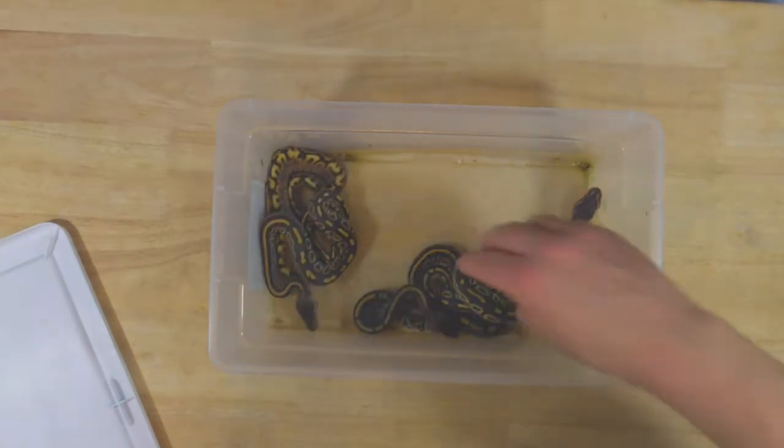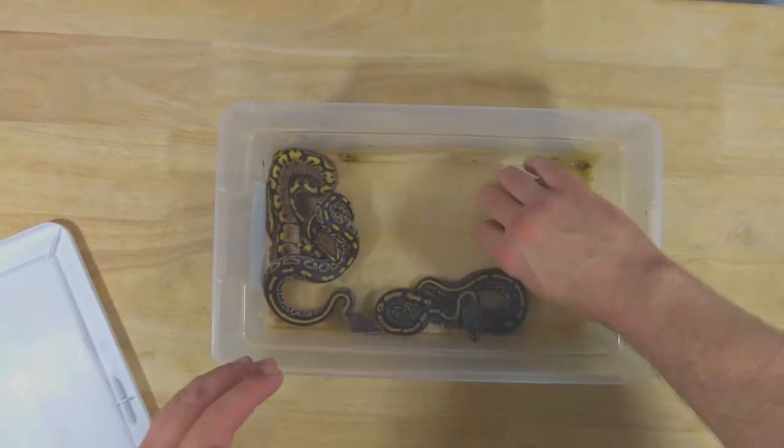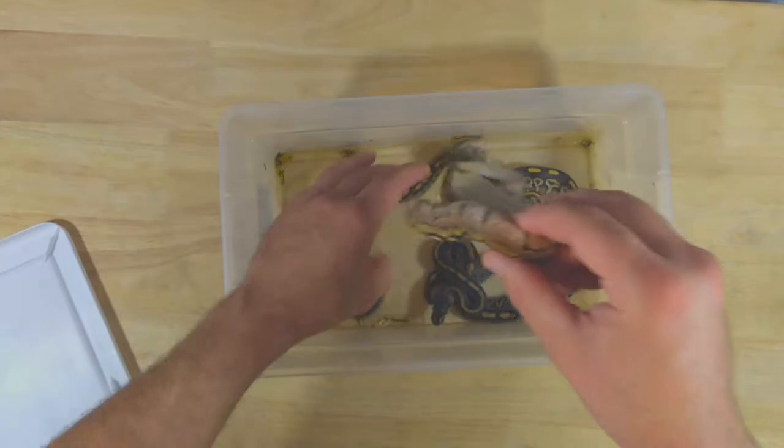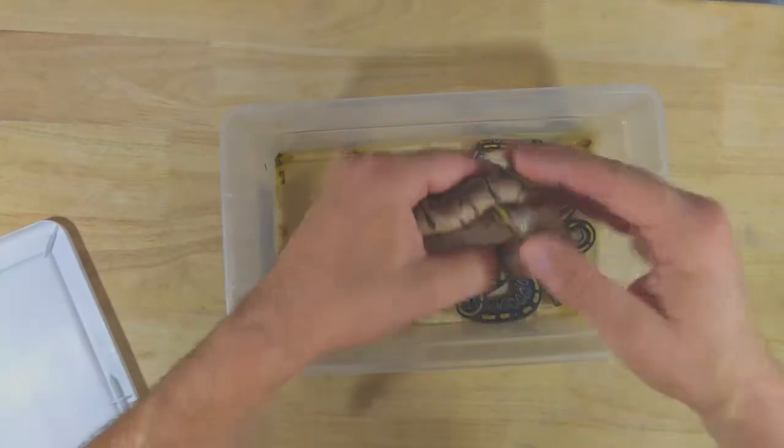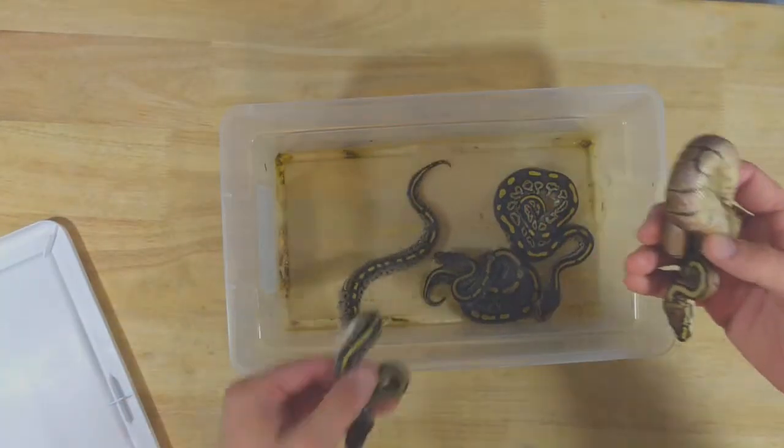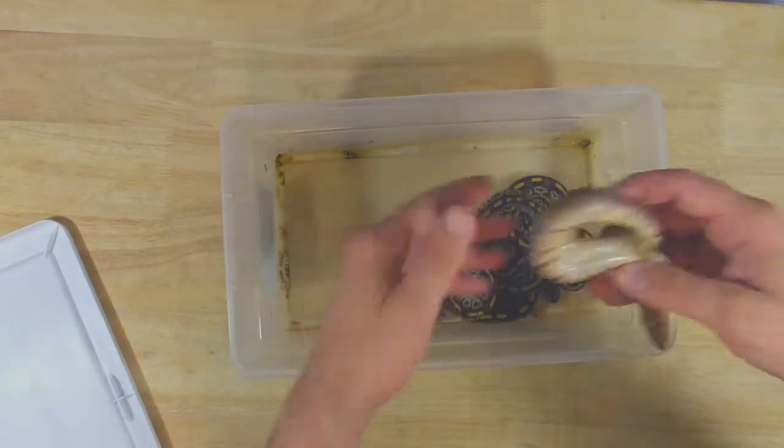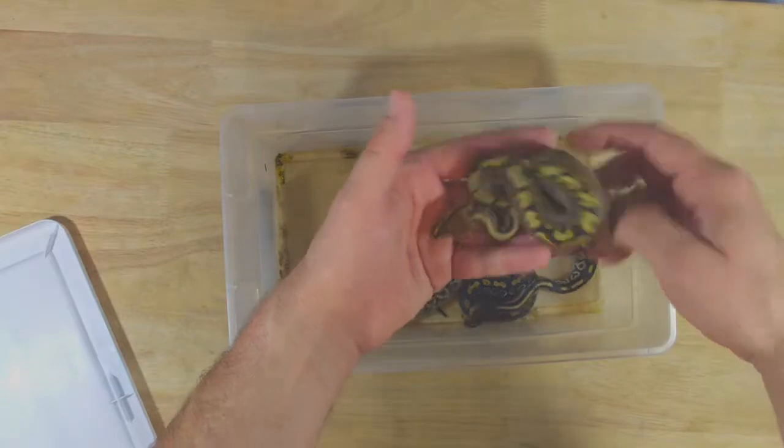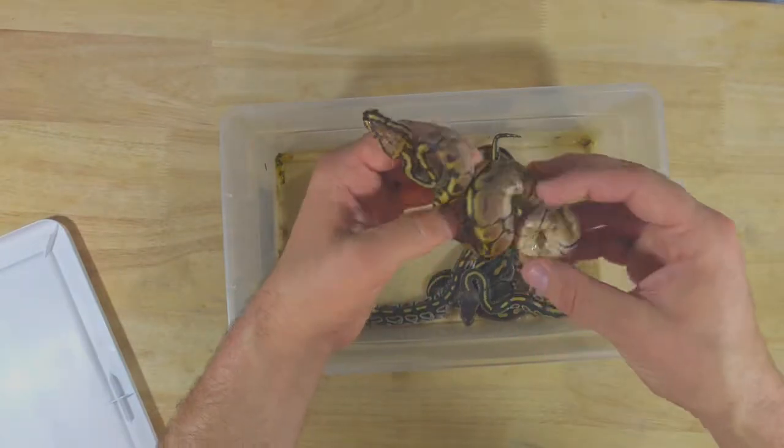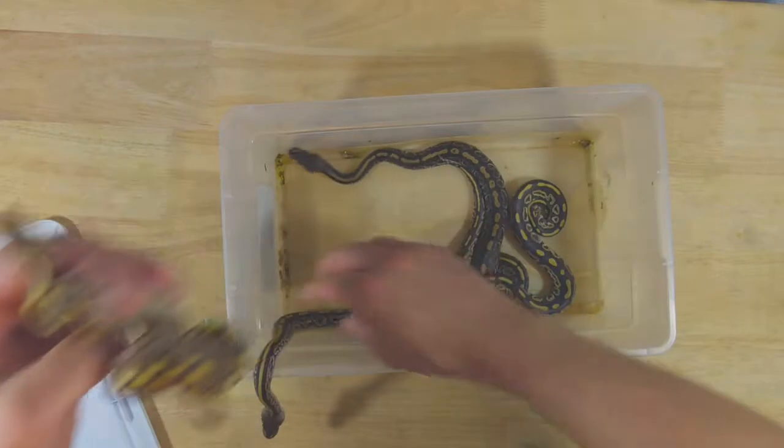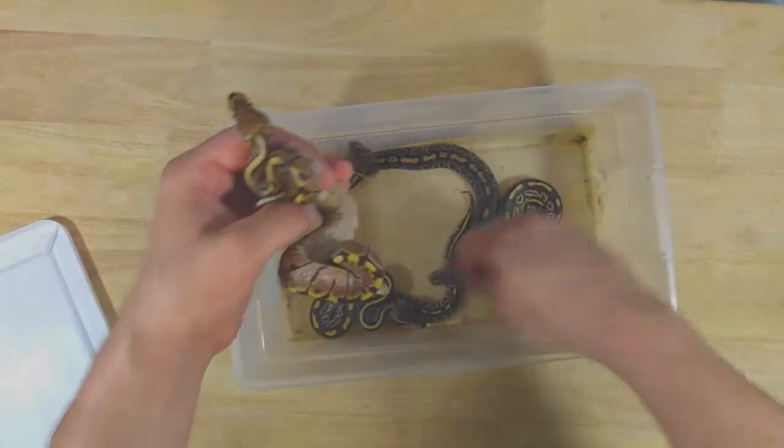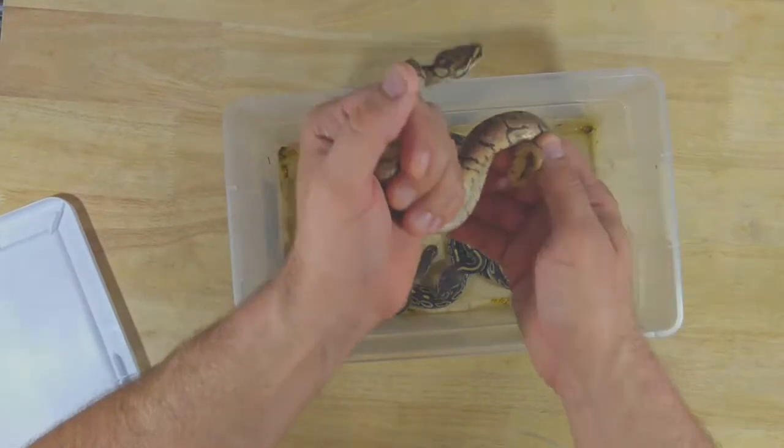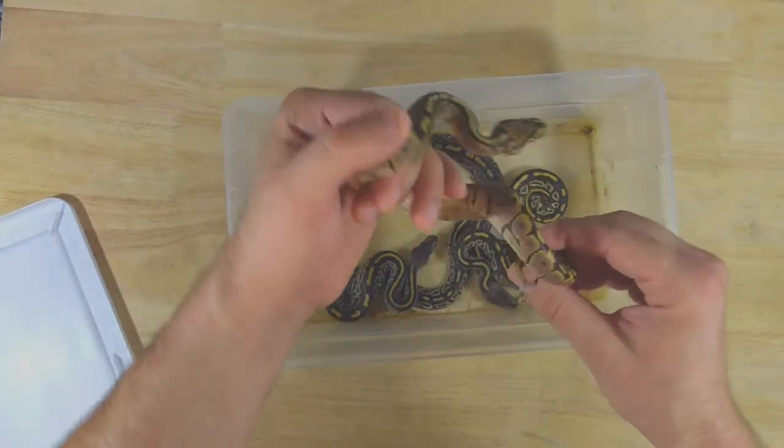I did have one birth defect, I'm going to save that one for last. There was one unfortunate birth defect in this clutch. I don't think it's going to be something that's needing to be culled, but it is something that I will just hold back the snake. But I'll show you that last. Okay, another Red Widow. So, again, the crazy head pattern. The alien heads on the pattern still show up. The orange near the belly. Beautiful snake.